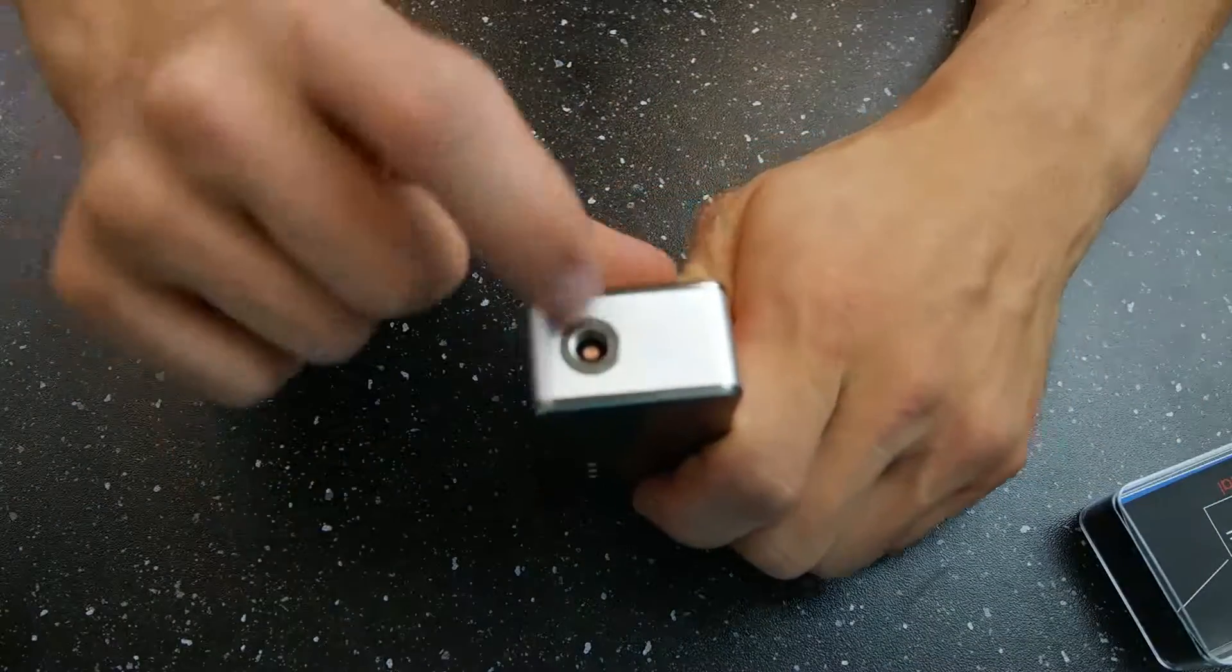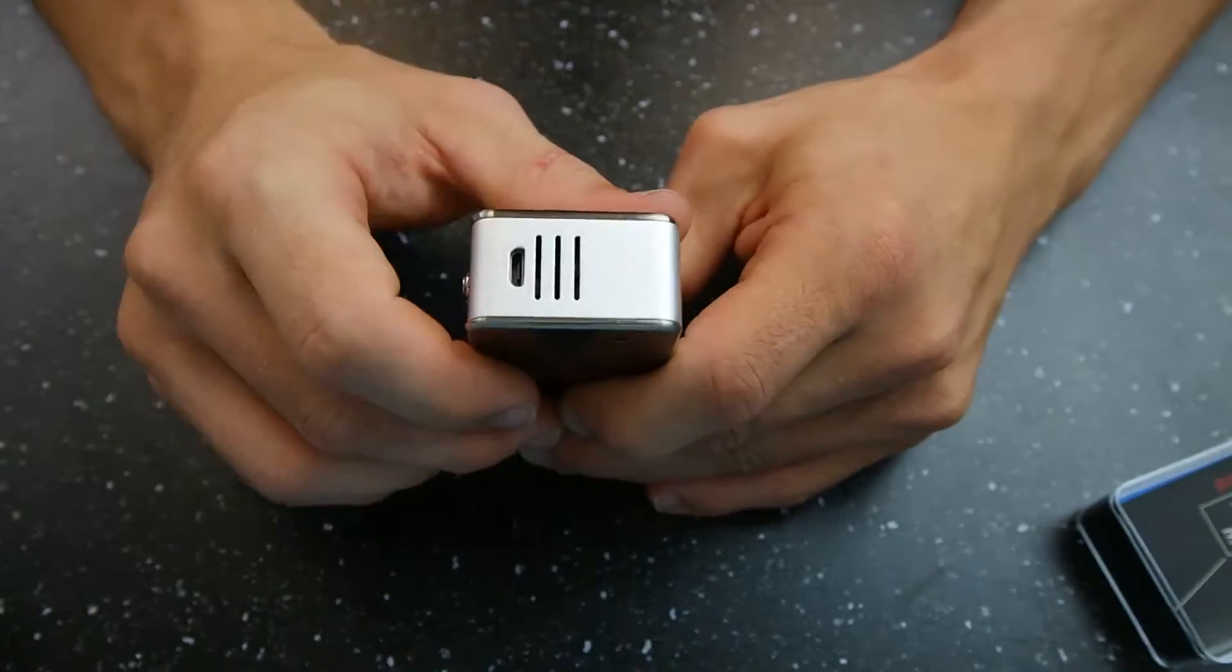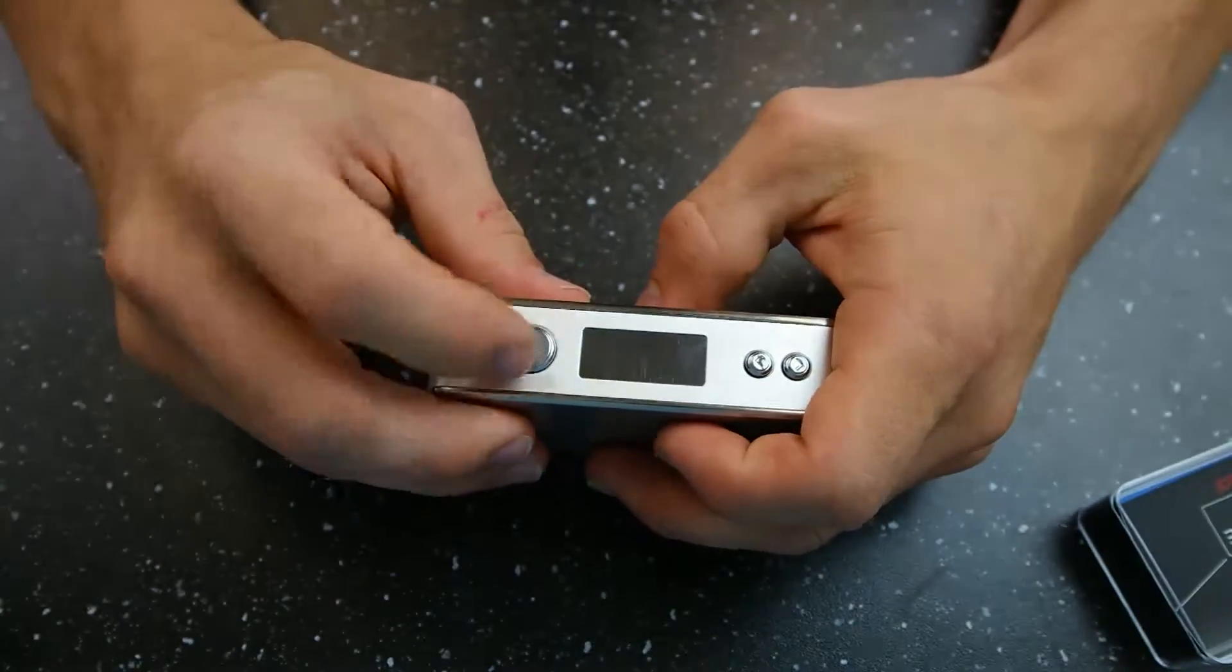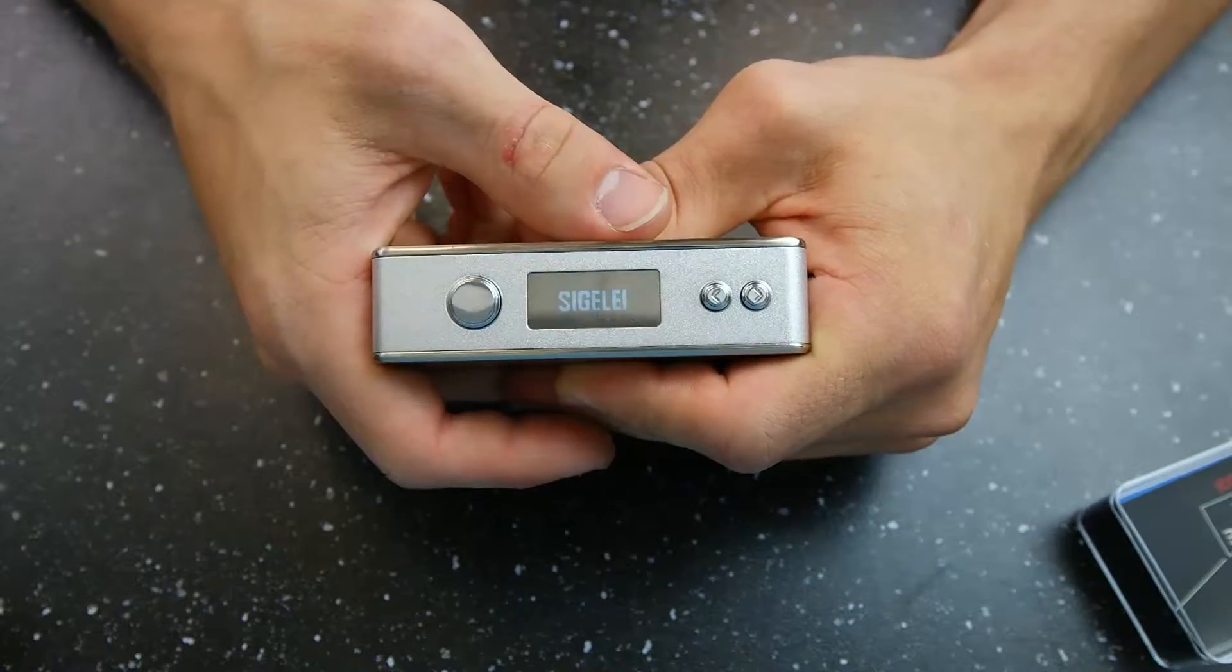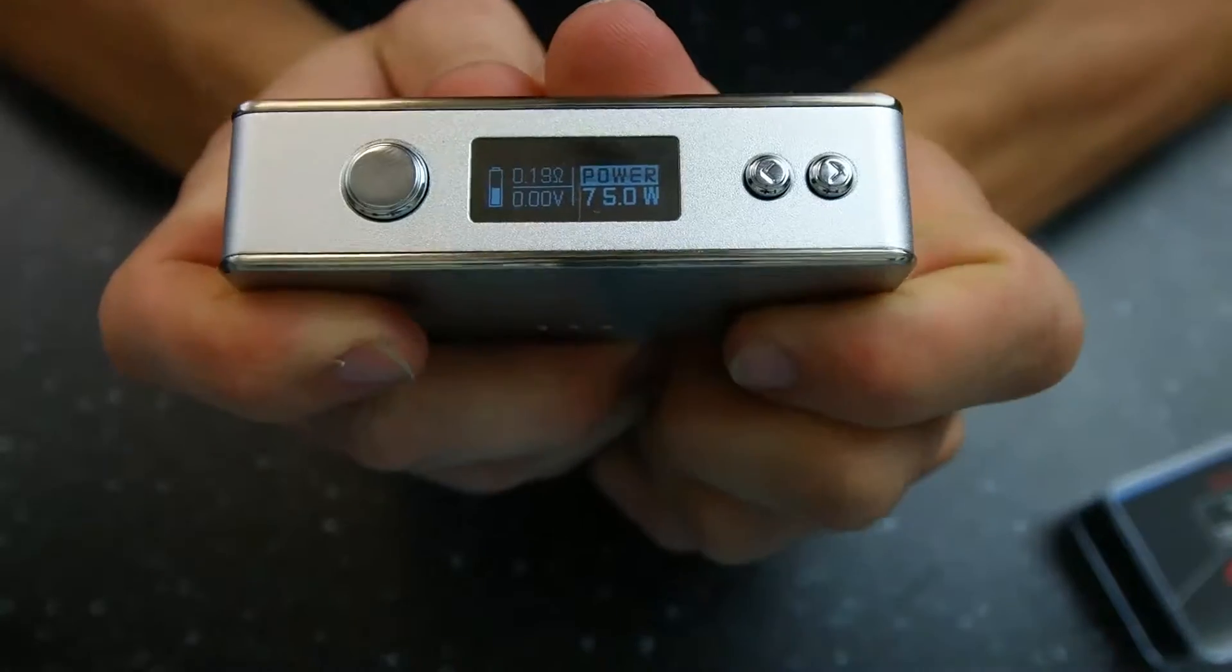So to go over the device real quick, we have a spring-loaded 510 at the top of the device. Charge port with a little bit of venting on the bottom. You have your fire button and your two directional buttons. Turn it on. There's going to be five clicks, one, two, three, four, five. Get this in a little bit closer. All right.